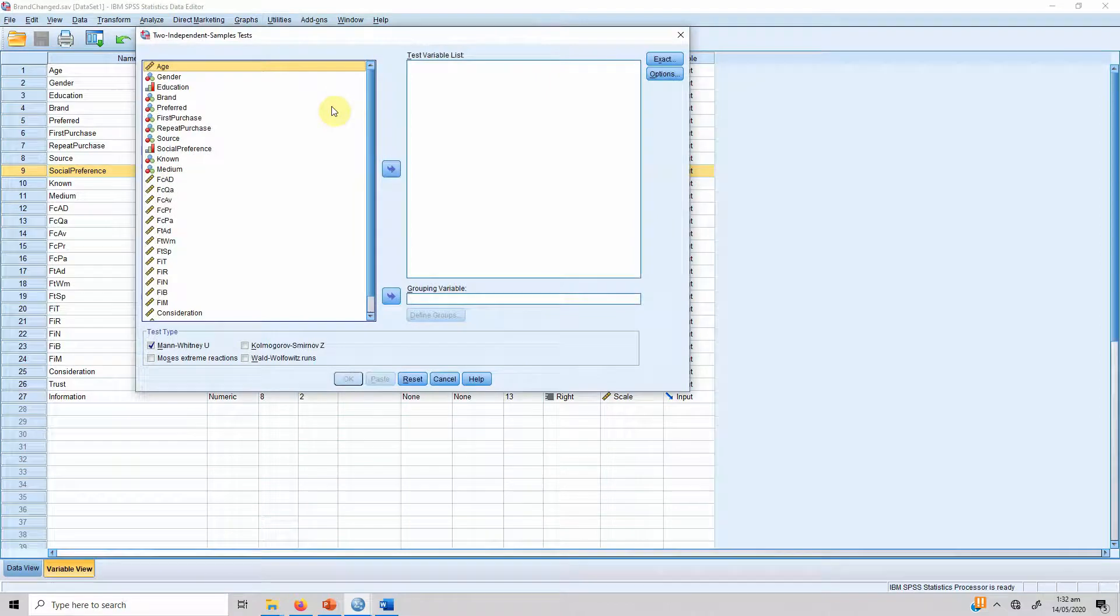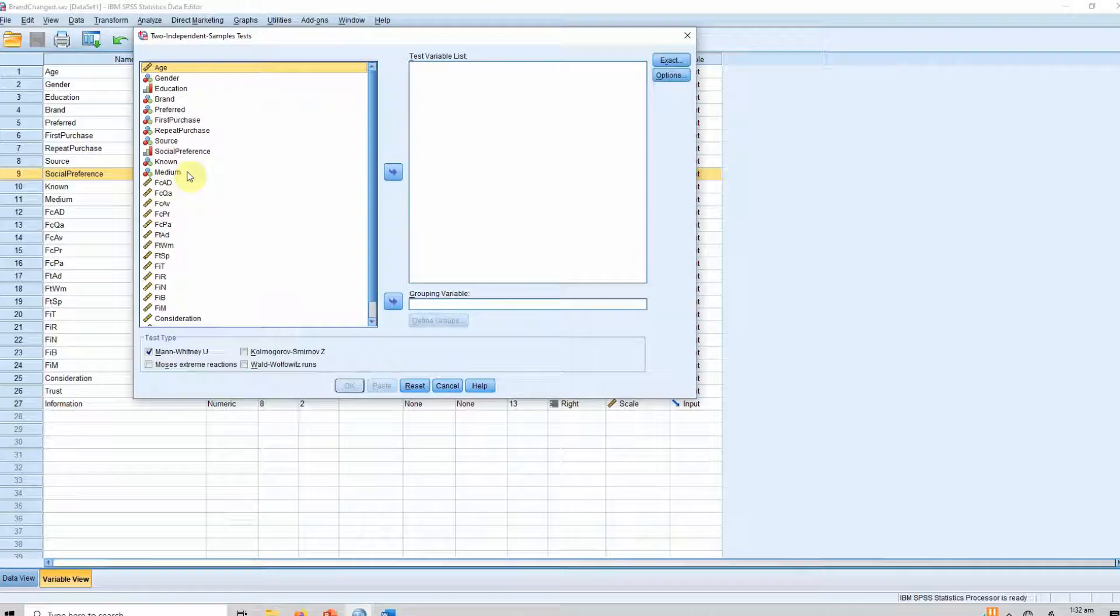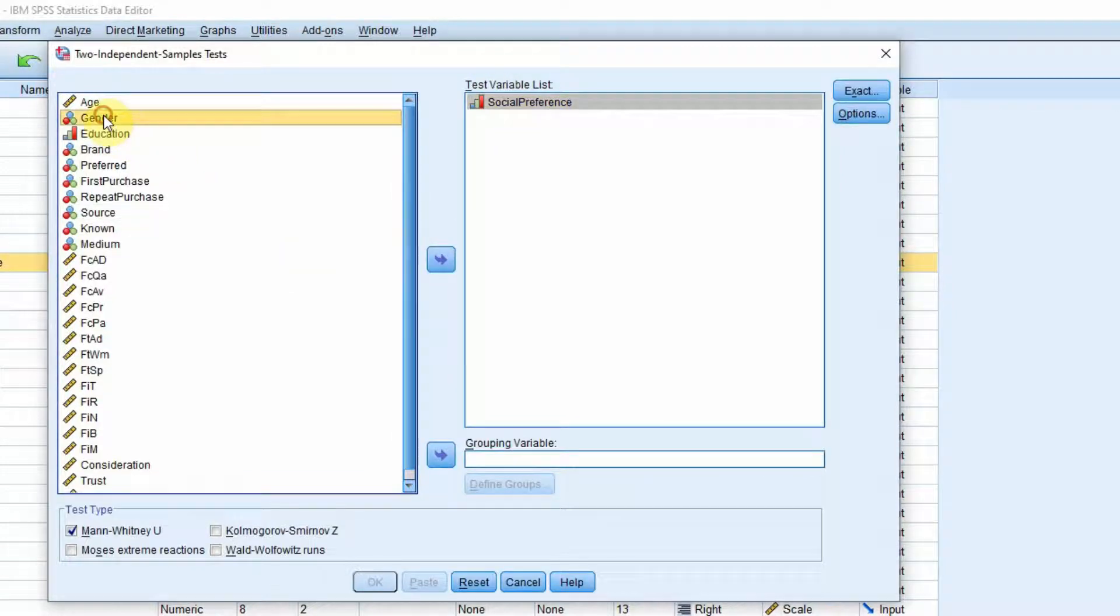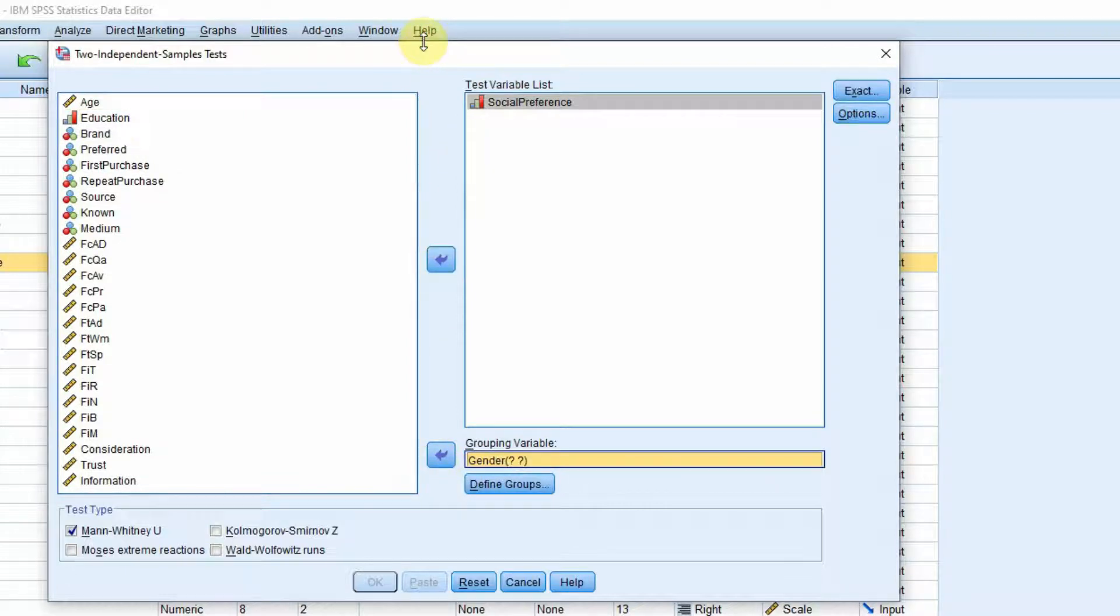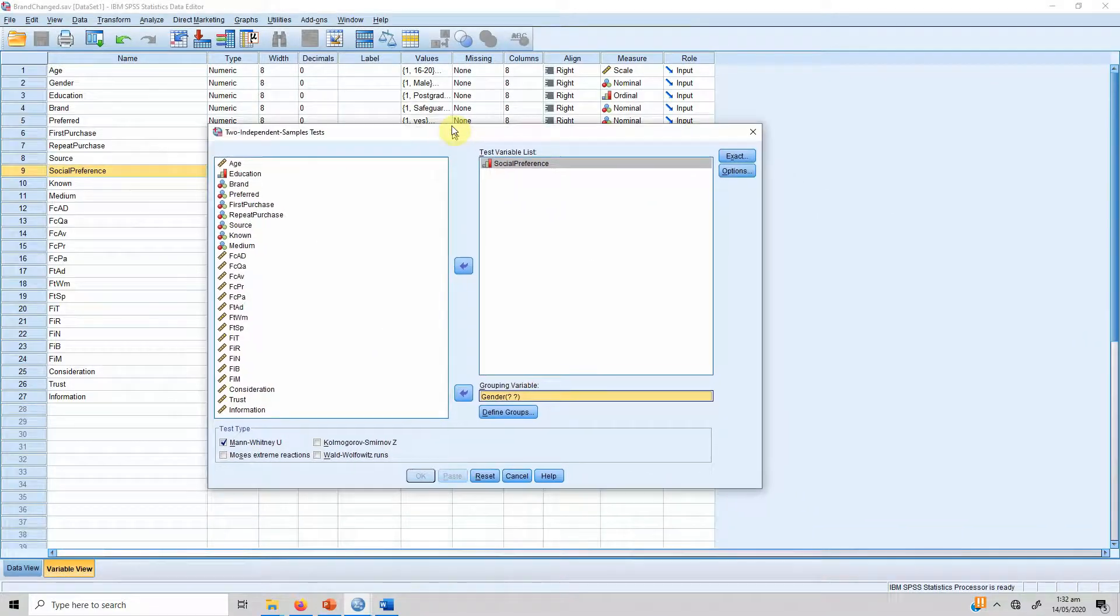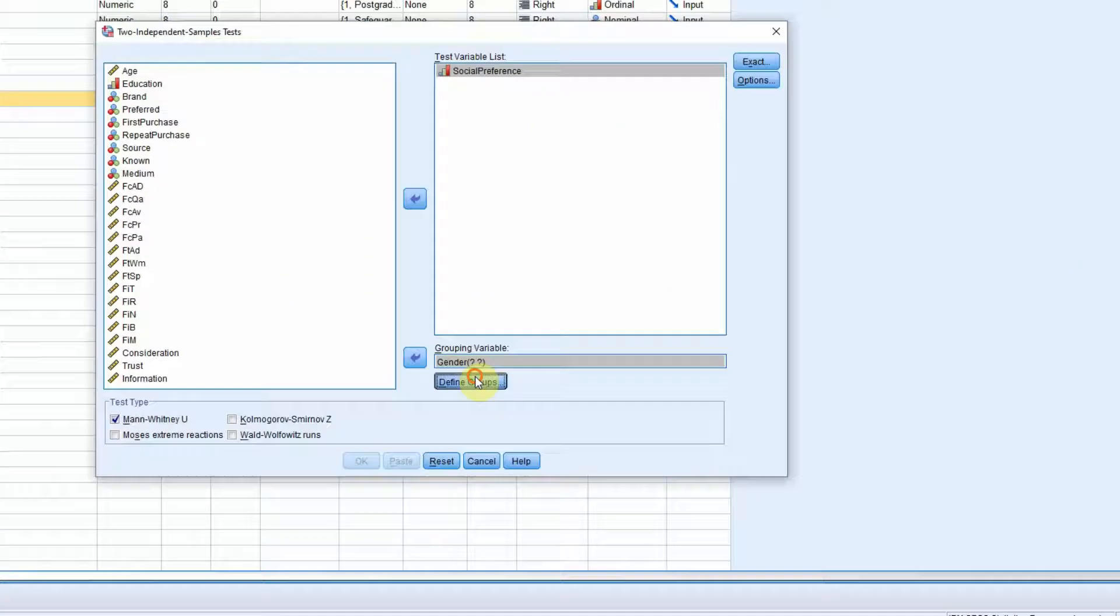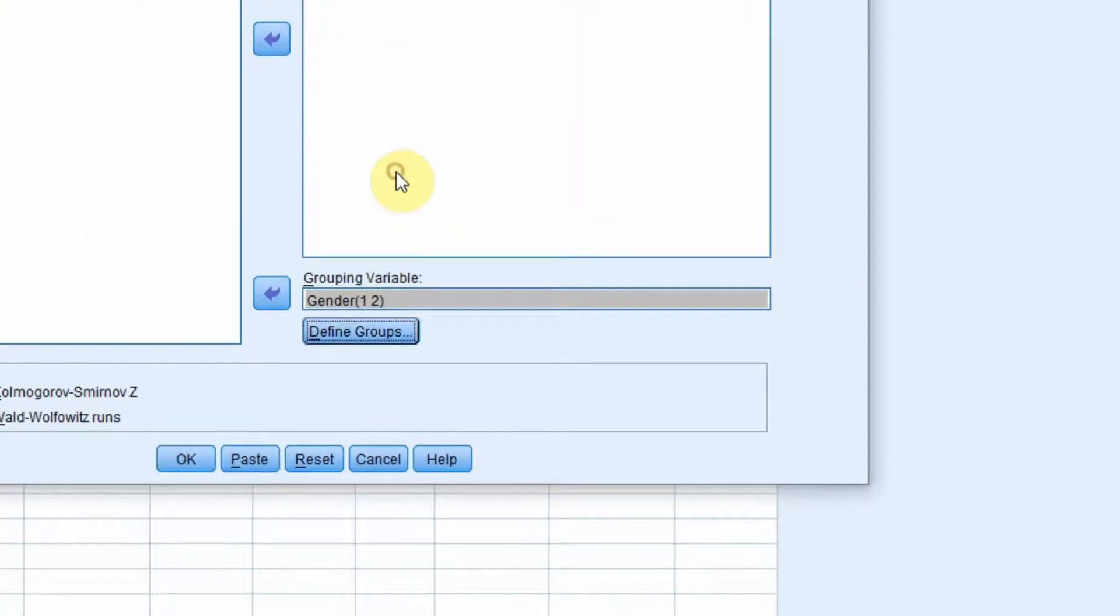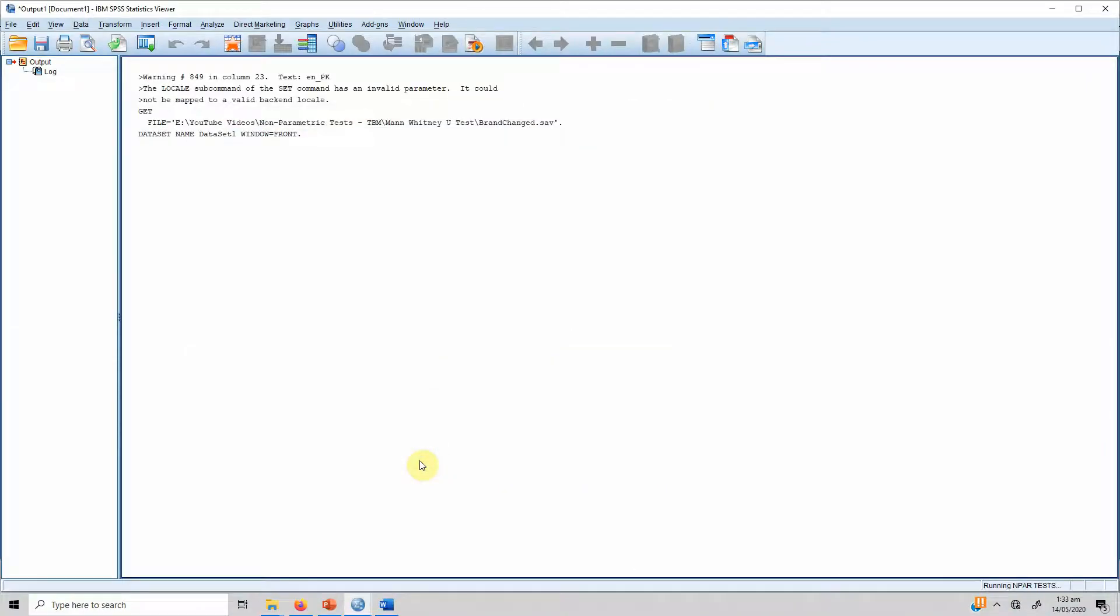You click on this and our interest is social preference. That will be added to this test variable list. And the grouping variable that we are interested in is gender. If you look here, the gender is one for male and two for female. So, you have to identify your groups. Press continue. Mann-Whitney U-Test is selected. So, what we do is we press OK for our results.